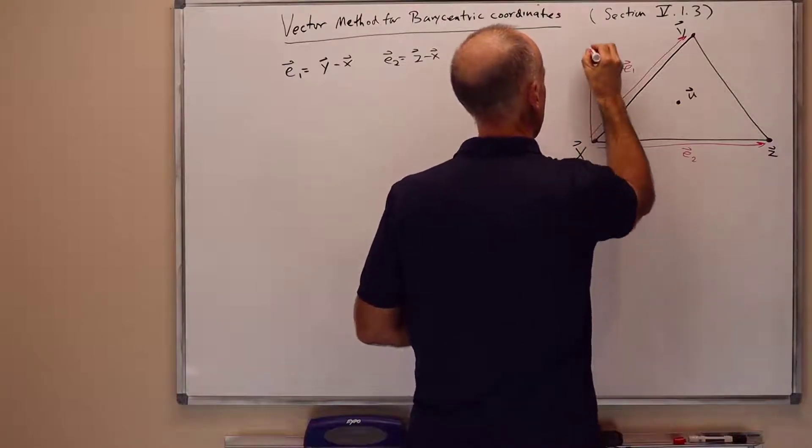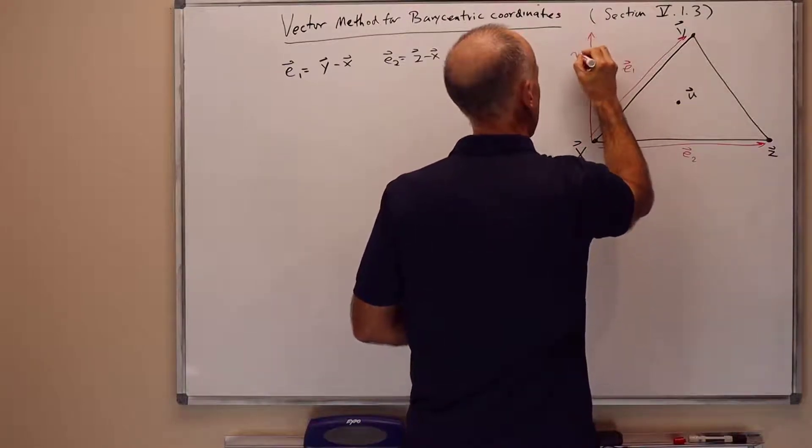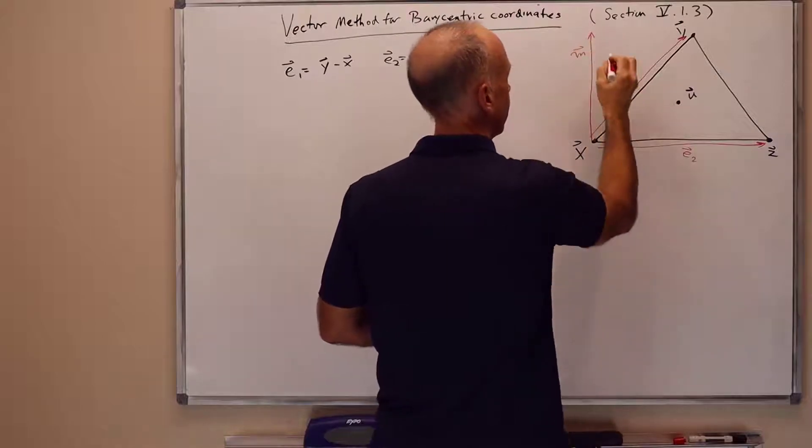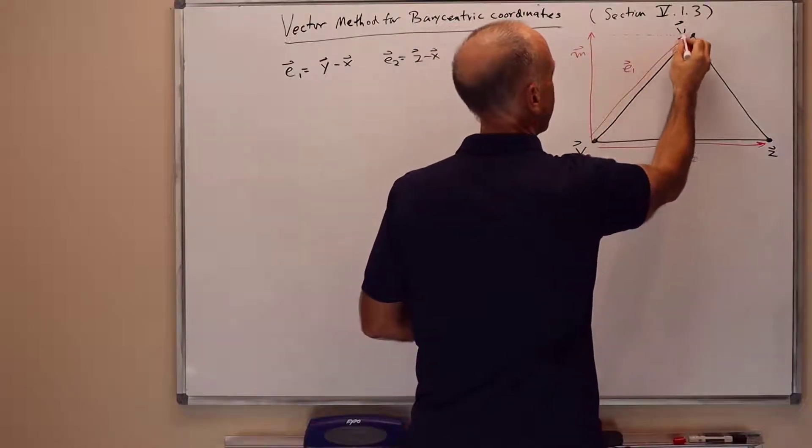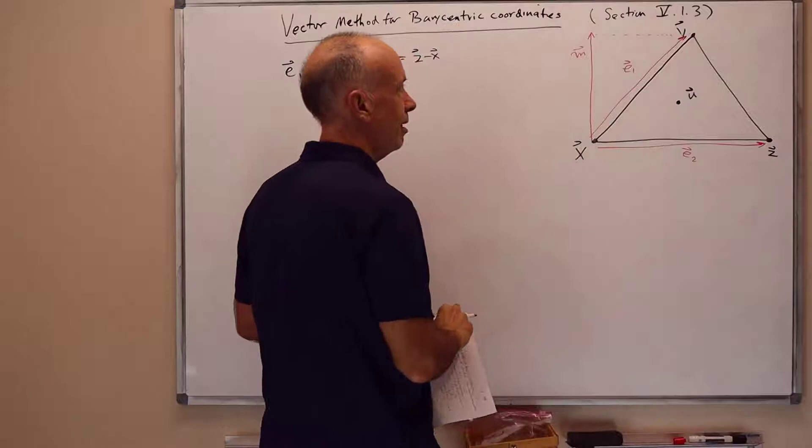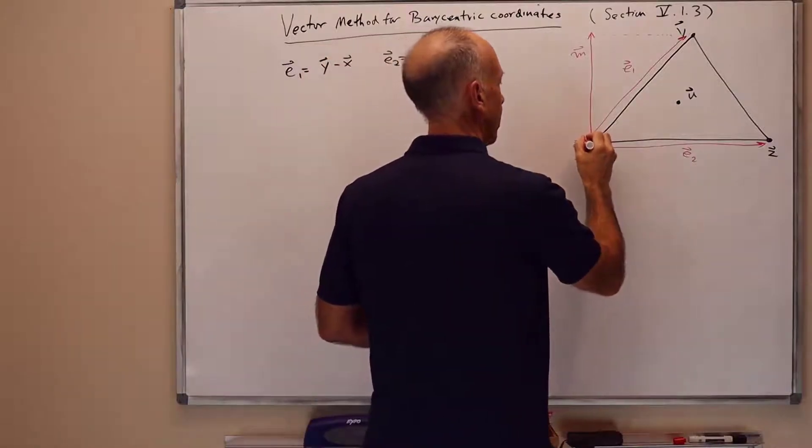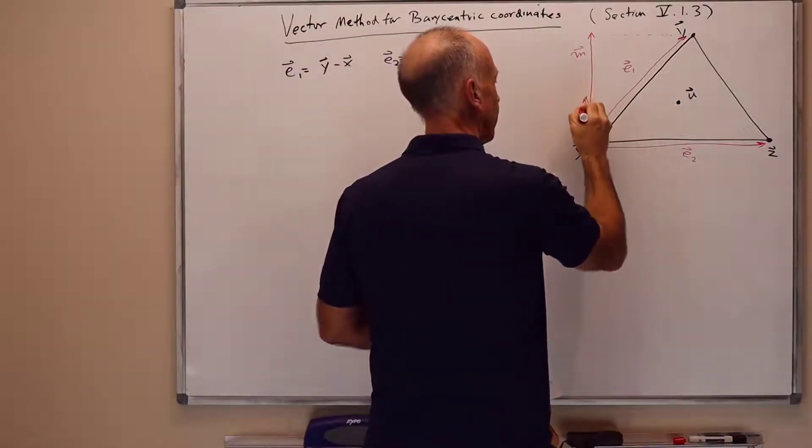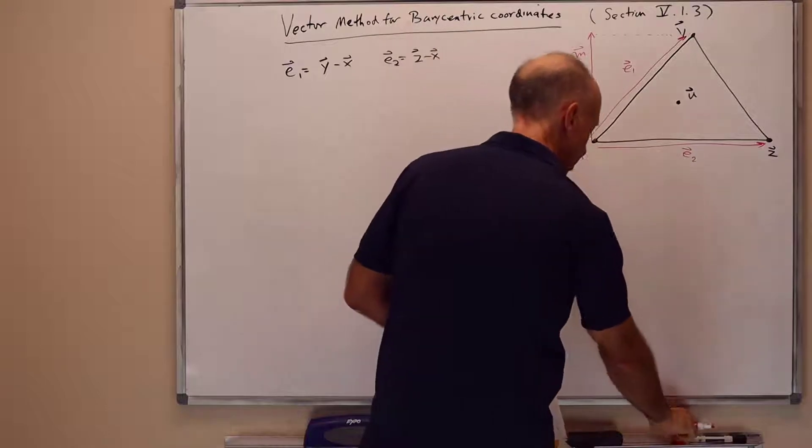And I'll further define vector m, which is perpendicular to e2 and has the same height above e2 as y.